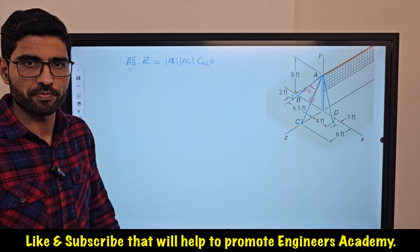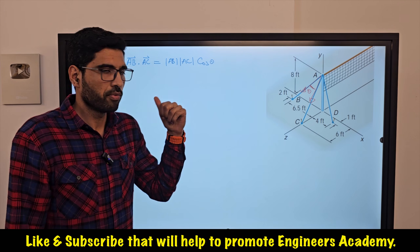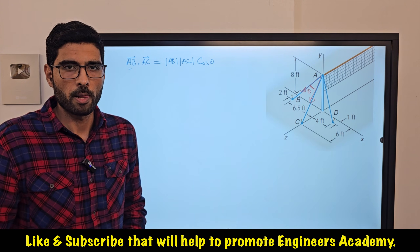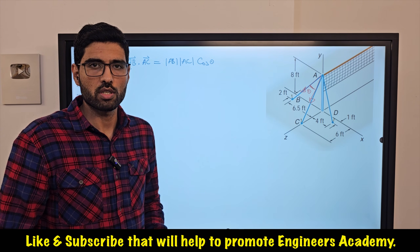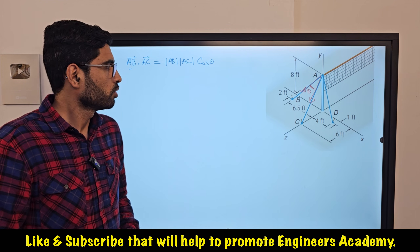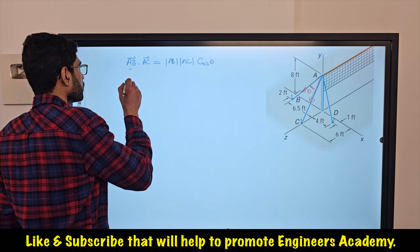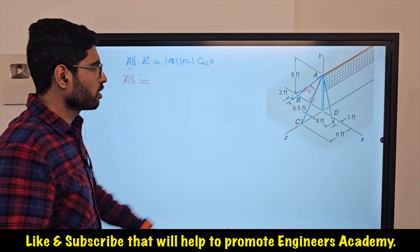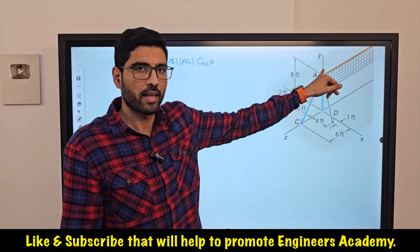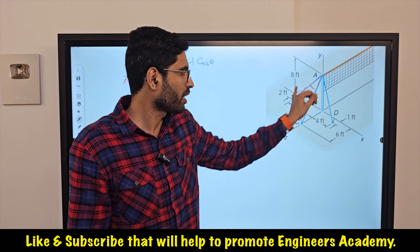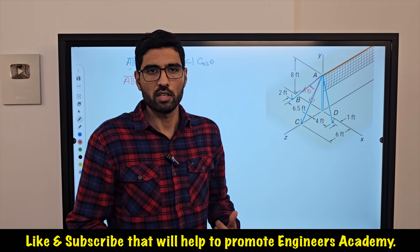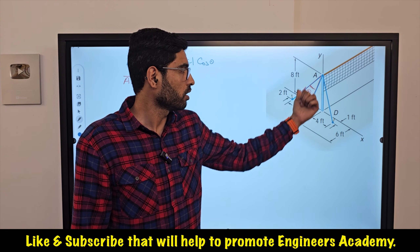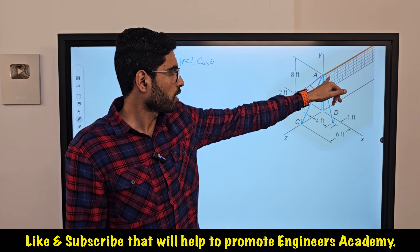If we rearrange this equation, cos of theta equals the dot product of AB and AC divided by the magnitude of AB times the magnitude of AC. The foremost task is that you must know how to find the position vector. To find position vector AB, we start from A and move along X, Y, and Z to reach point B.